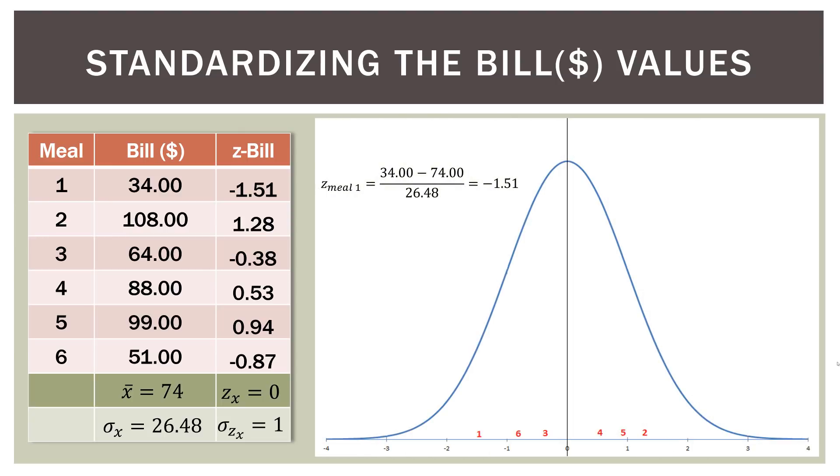Remember, what that means is that the bill value of $34 is 1.51 standard deviations below the mean. We're talking about standard deviations when we're talking about z-scores or standardized scores. So we can go ahead and put that on a distribution here. You can see that this value for meal one is 1.51 standard deviations below the mean. The red one down there is halfway between negative one and negative two. We can do the same for meal number two. Meal number two is 1.28 standard deviations above the mean, and we do the same for the rest. You can see where each meal falls down there on the bottom of the distribution.